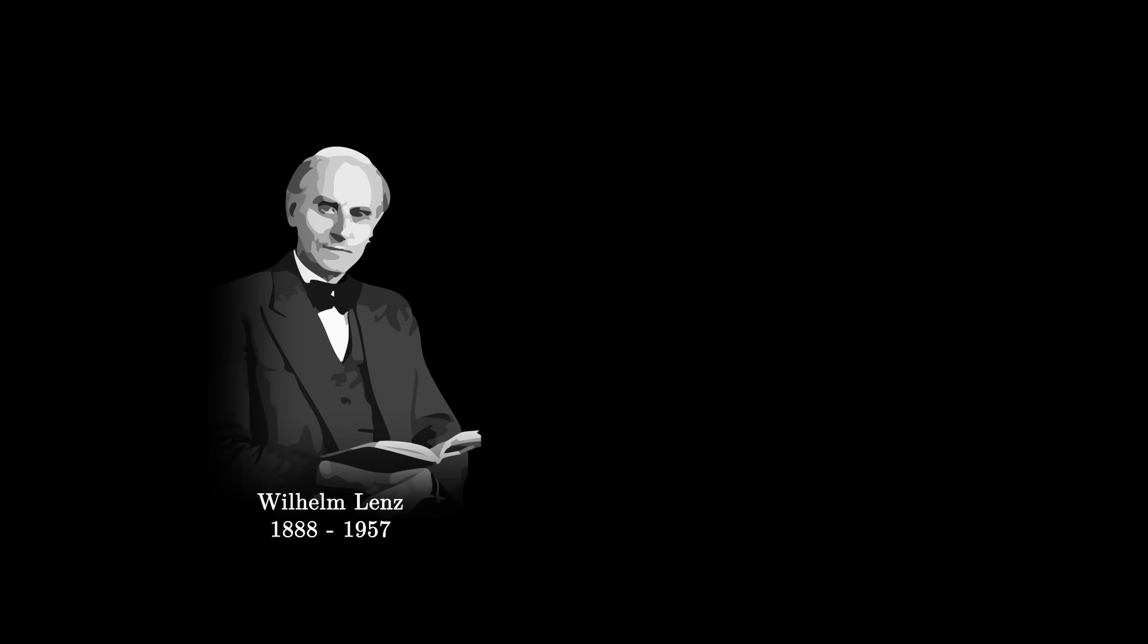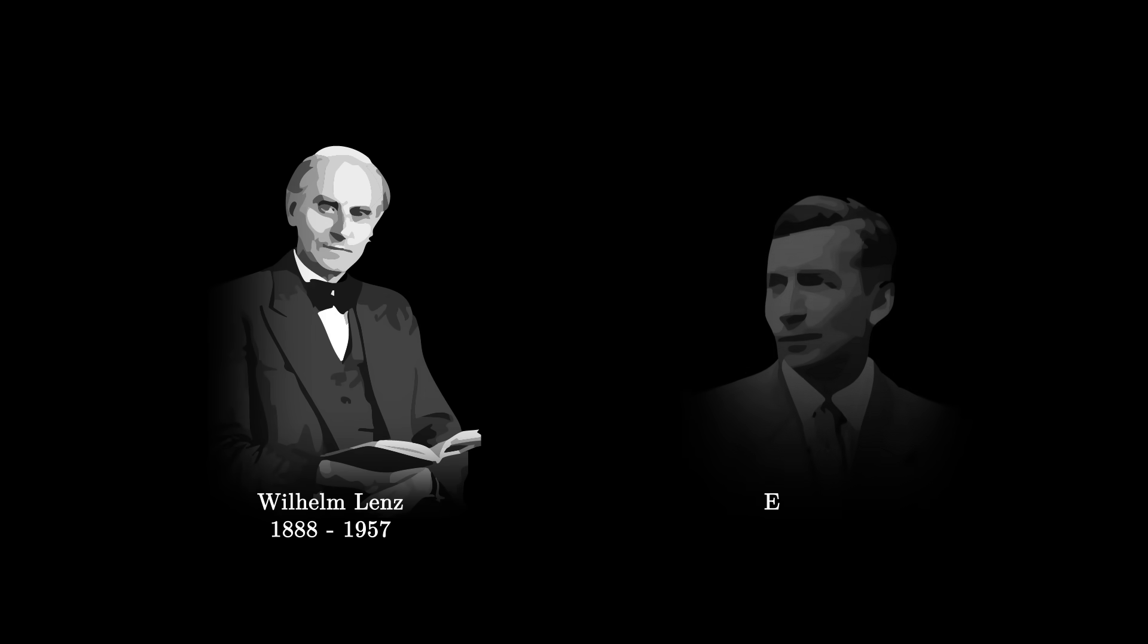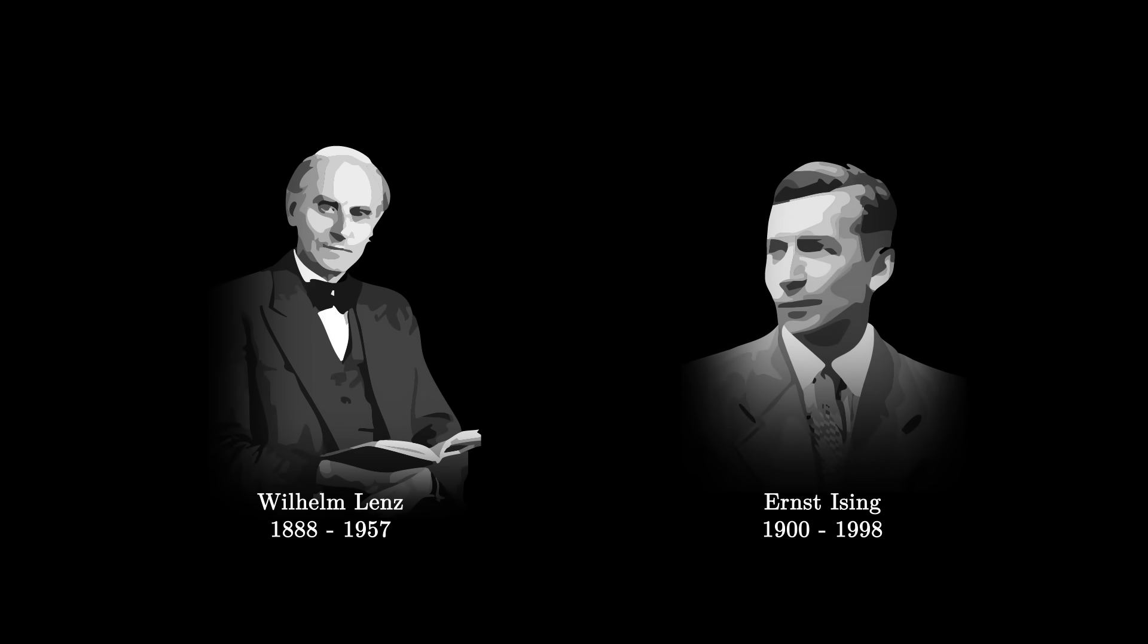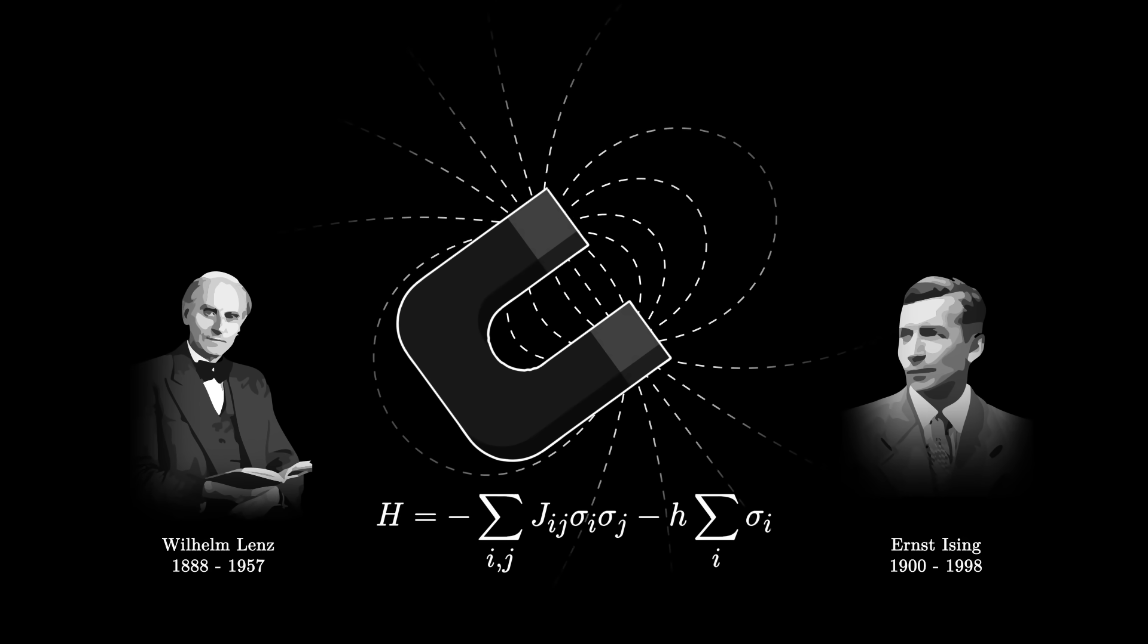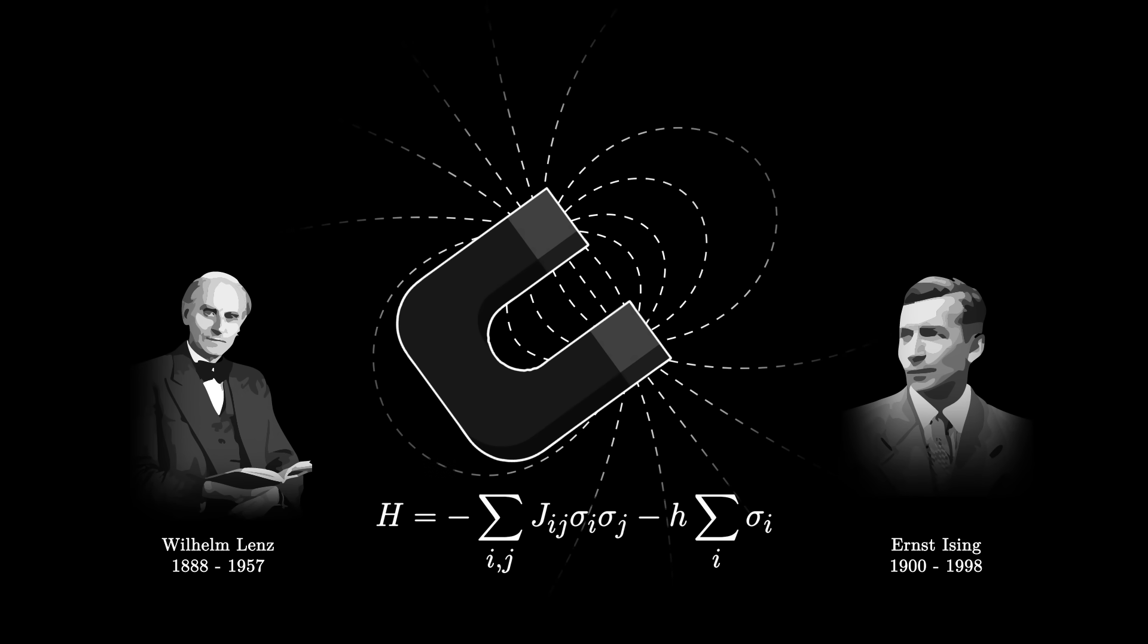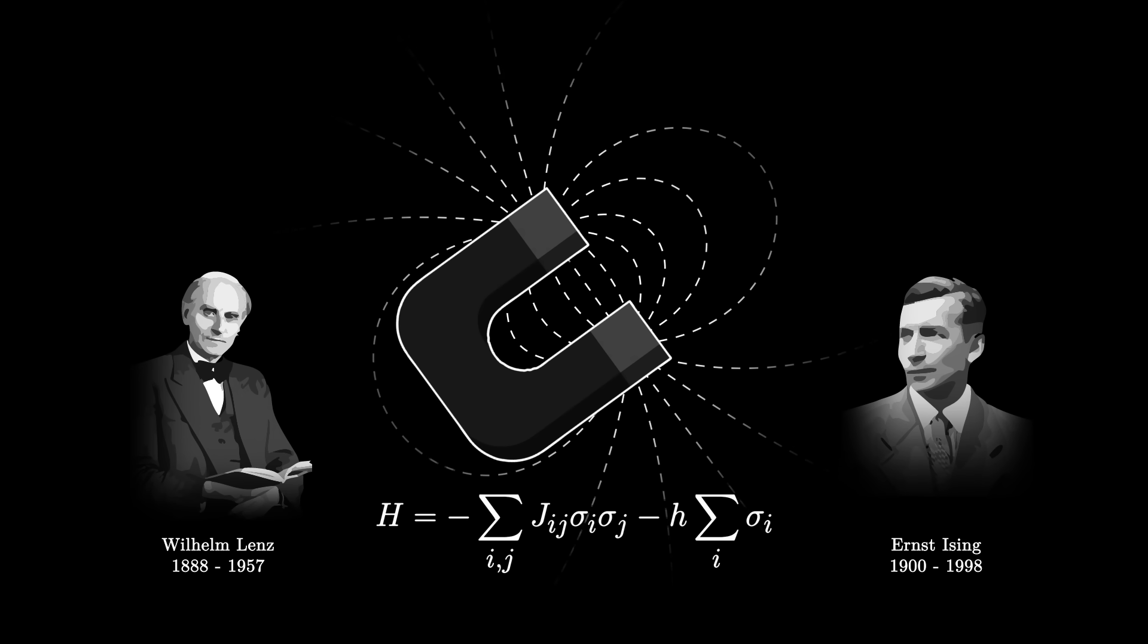It's 1920, and German physicist Wilhelm Lenz proposes a physics problem to his student, Ernst Ising. The professor asks Ising to study a model for understanding magnetism in certain materials such as iron, which can form permanent magnets.